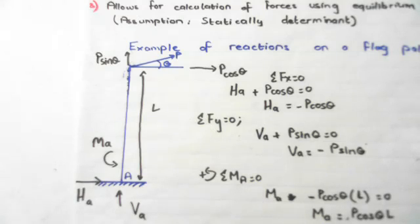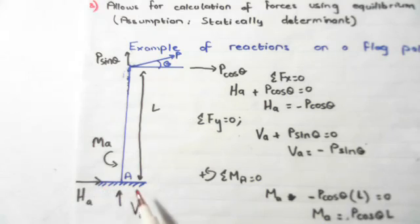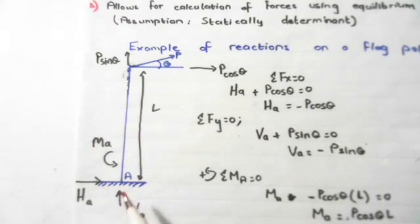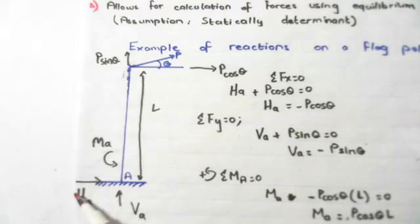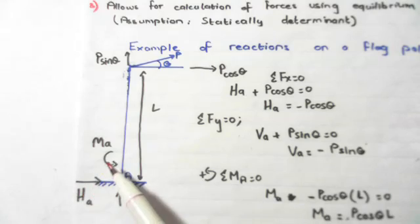We need to work out the reaction forces at the bottom. Since this is a fixed support, we draw reaction forces. As shown previously, a fixed support has a vertical restraint, a horizontal restraint, and a moment restraint.